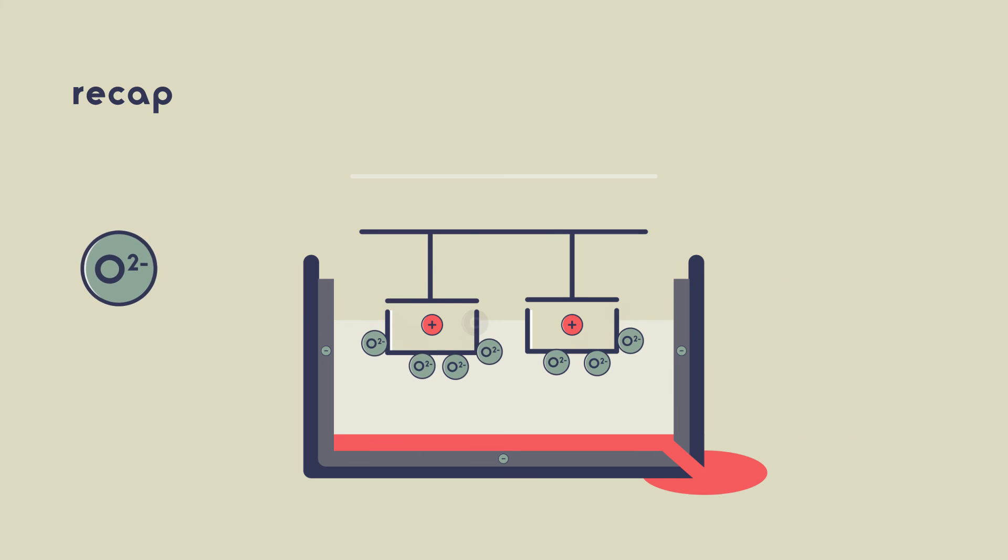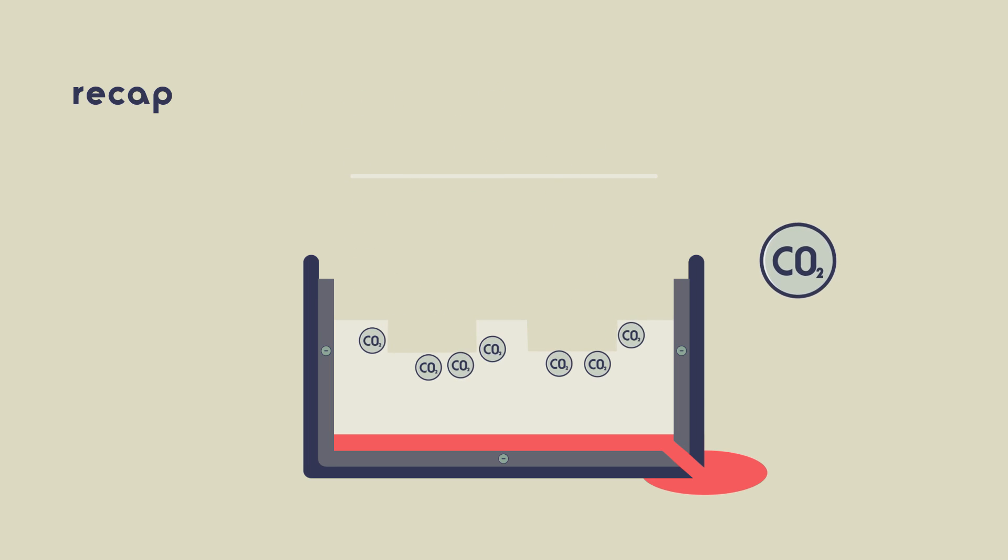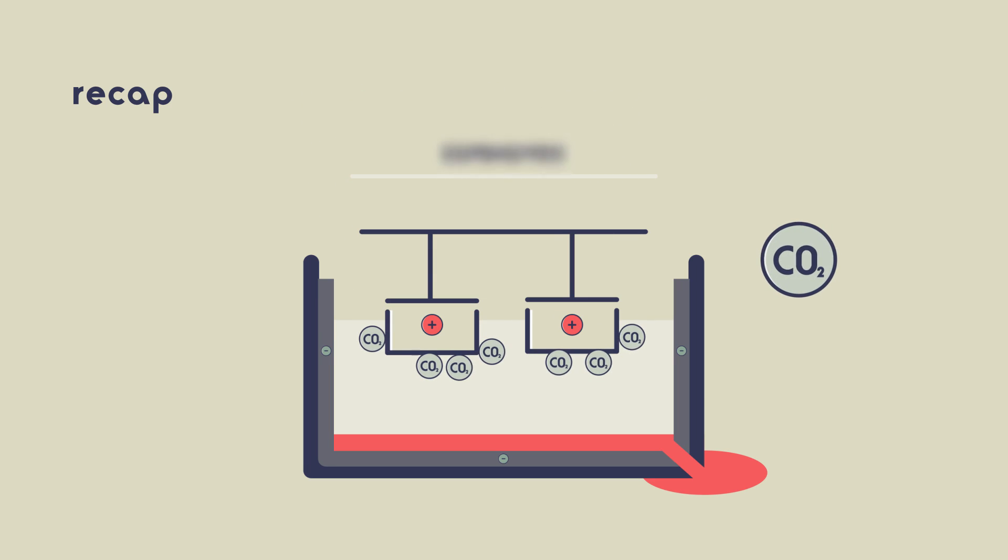The anode is gradually worn away because the oxygen from the solution reacts with the carbon of the graphite anode, producing carbon dioxide, and so the anode needs to be replaced regularly. Aluminium extraction is very expensive because a lot of electricity is needed.